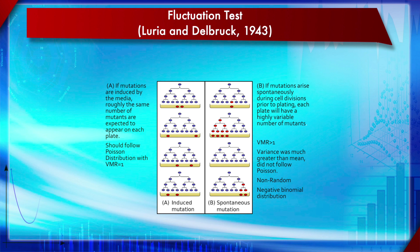Luria and Delbrück determined the distribution using the VMR — Variance-to-Mean Ratio. They found that the variance-to-mean ratio was much larger than one, indicating a negative binomial distribution. This means the variance is much higher than expected from a Poisson, supporting the conclusion that these mutations are pre-existing, not induced by selection, but merely sieved by natural selection. That is what the fluctuation test demonstrated.